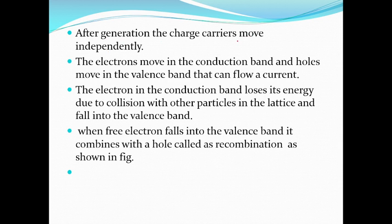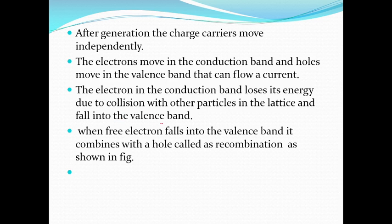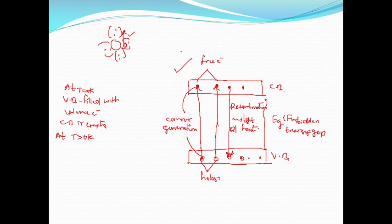After generation, the charge carriers are free to move — electrons in the conduction band and holes in the valence band — which results in conduction. The electron in the conduction band, after some time, loses its energy due to collisions between electrons and with the lattice. It falls to the valence band, combines with a hole, and that process we call recombination, which can be shown in this figure.